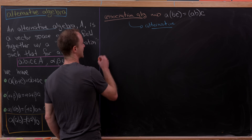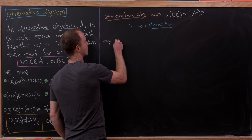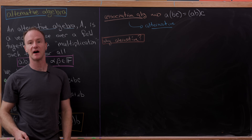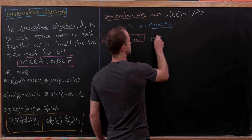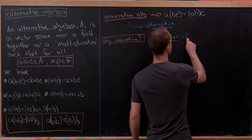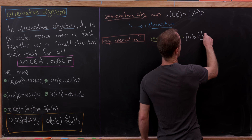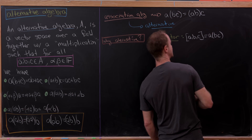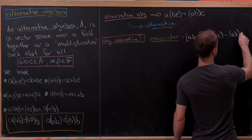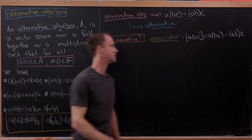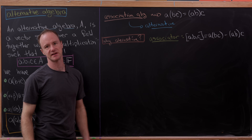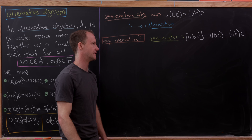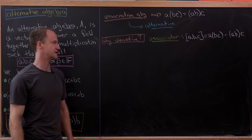Next I'd like to look at the question: why do we use the word 'alternative'? In order to do that, I'm going to define something called the associator. It's got three inputs, and it is the difference between A times BC and AB times C. Notice if we've got an associative algebra, this is identically zero, but if we have a non-associative algebra, then it is not identically zero.